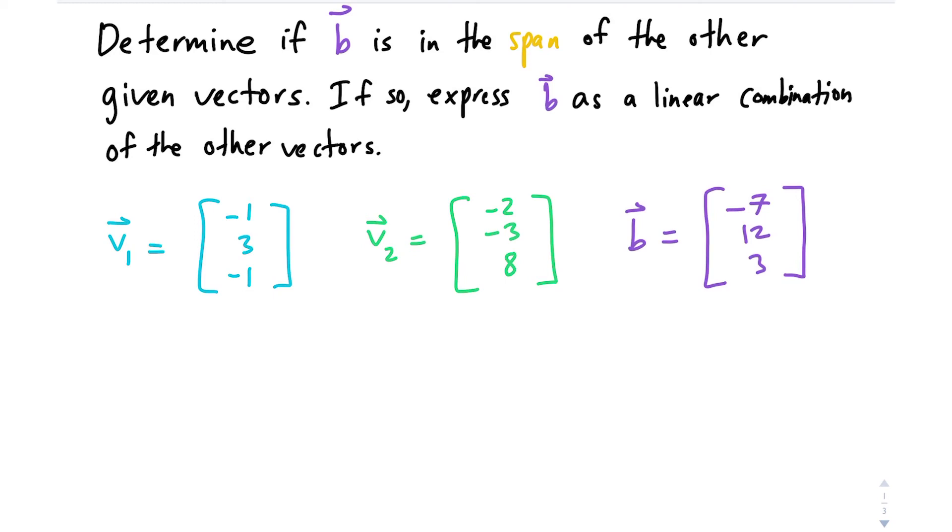All right, so today we're going to be doing a span problem. In this example, we have these two vectors, v1 and v2, and we have this third vector b. We're trying to figure out whether b is in the span of v1 and v2, and if it is, we're going to express it as a linear combination of the other vectors.